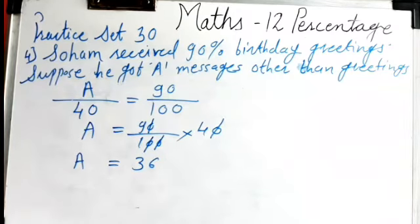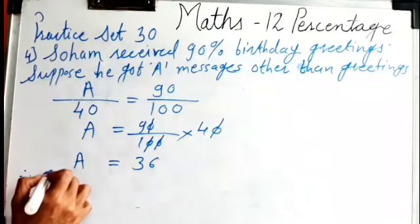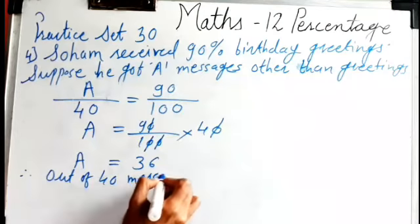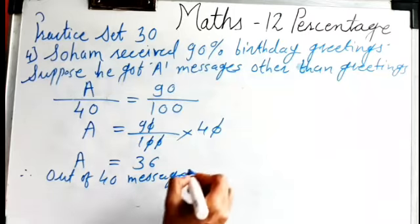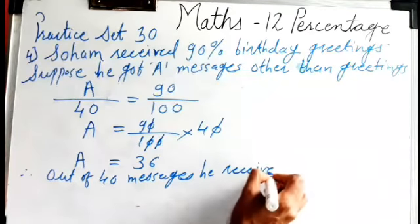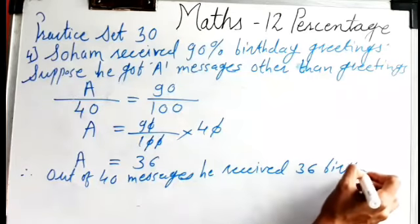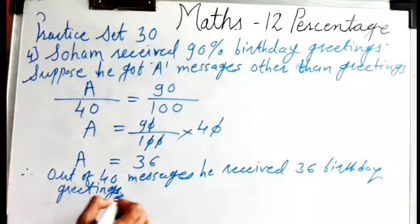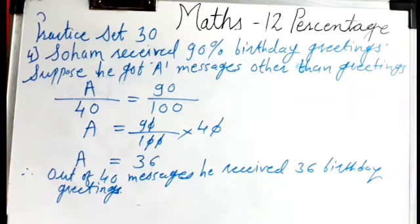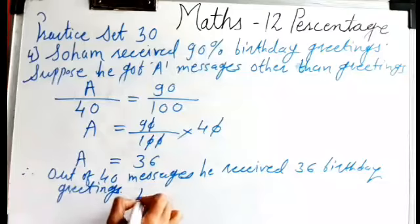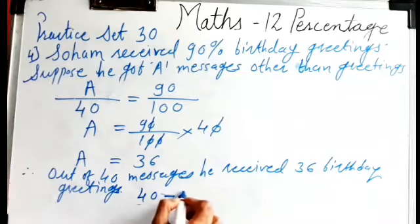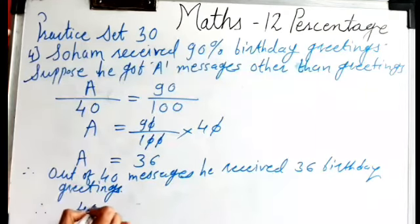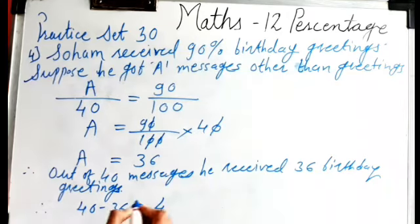That means, students, out of 40 messages he received 36 birthday greetings. Now, this 36 are the greetings. So to calculate how many other messages he got: out of 40 we got 36 greetings, so you subtract 40 minus 36, which gives 4. That means he got 4 other messages.